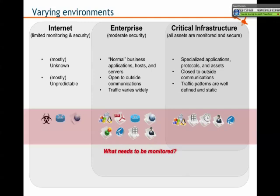While the internet is mostly unknown and is extremely unpredictable, your control systems are very predictable. The specialized applications, protocols, and assets — everything within that control system is for the most part very static. The traffic patterns are well defined, and if you don't already have an understanding of how that works, it's fairly simple to create baselines to work from.